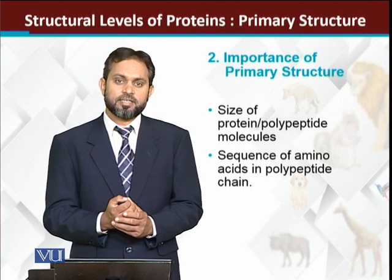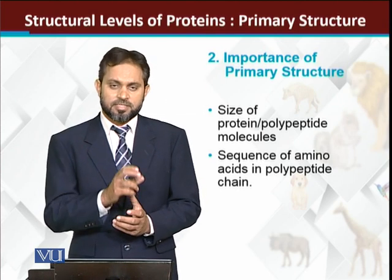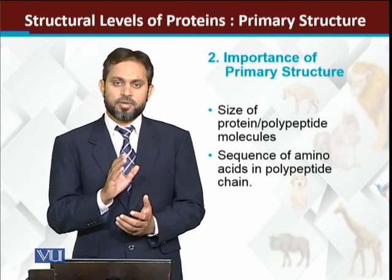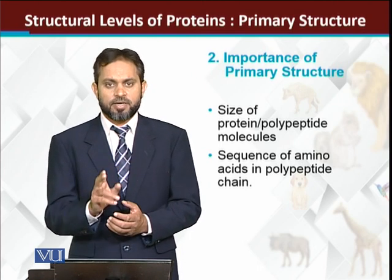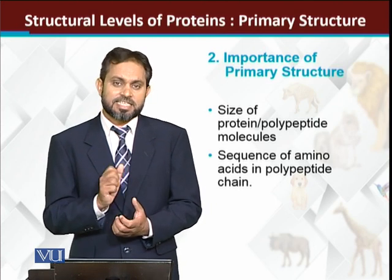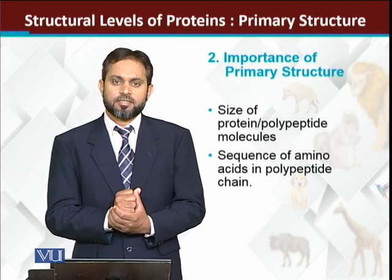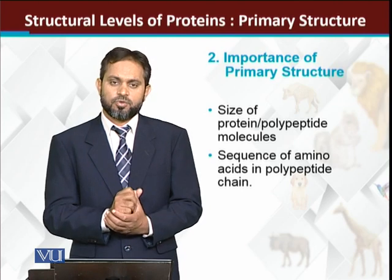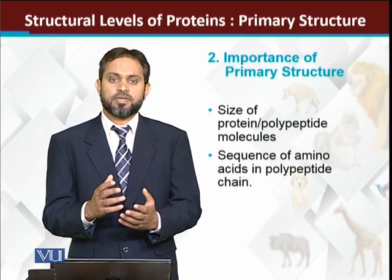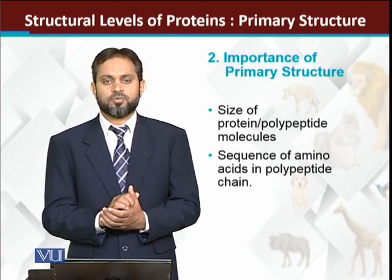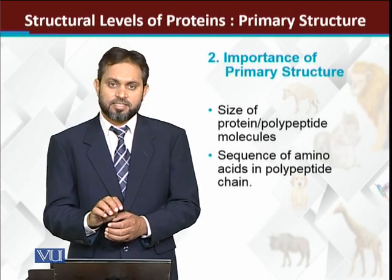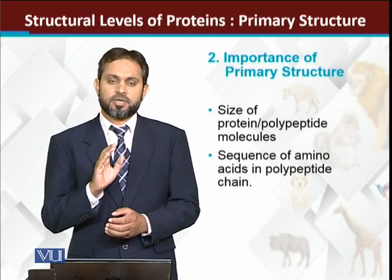The second important information from primary structure is about the sequence of amino acids — which amino acid comes after which. The sequence and position of every amino acid is very very important, because if even one amino acid position changes, the protein may become non-functional. For example, in sickle cell anemia, glutamic acid is replaced by just one valine, and due to this single amino acid change, hemoglobin cannot properly transport oxygen. So the information from primary structure — regarding size and specifically the sequence of amino acids — is very very important.